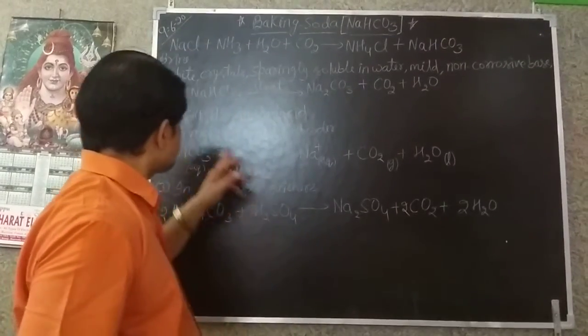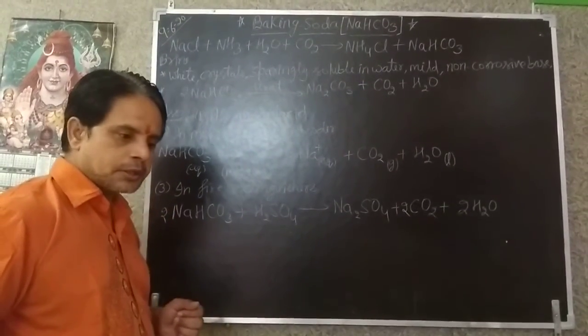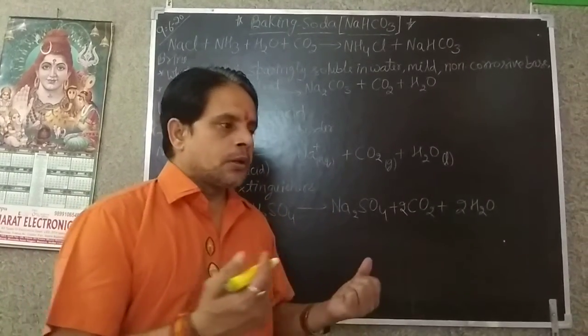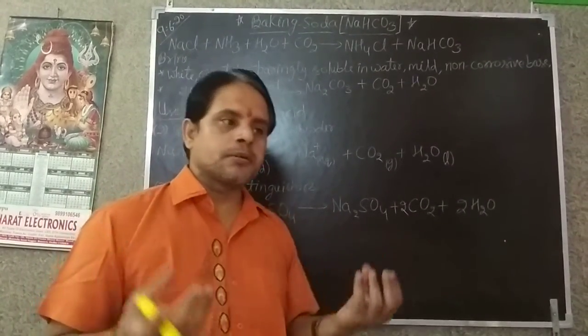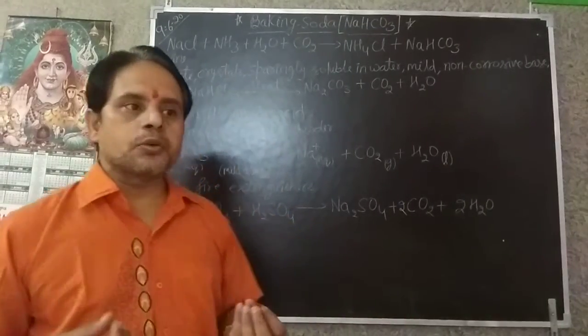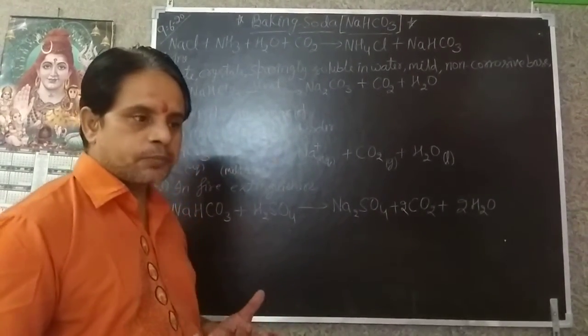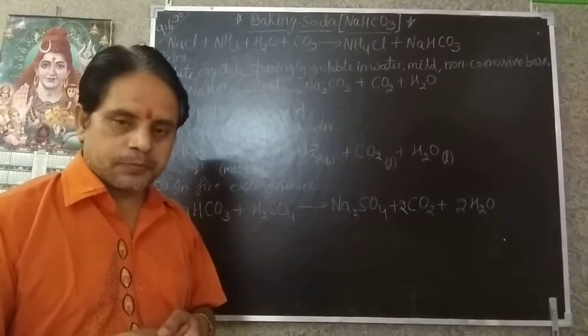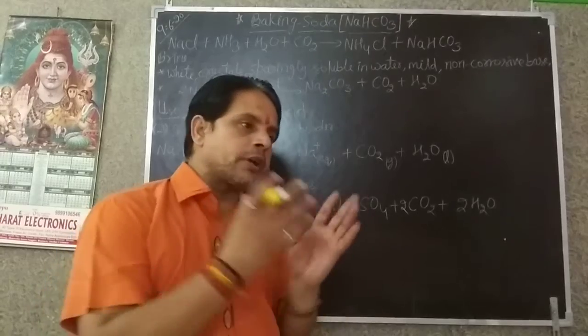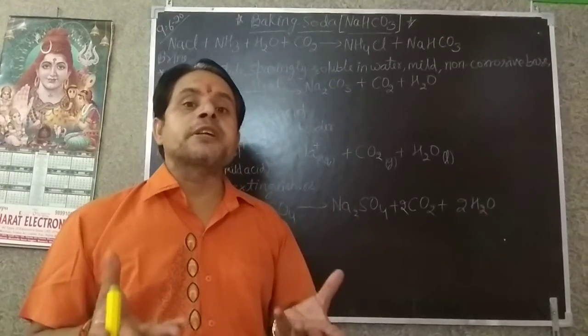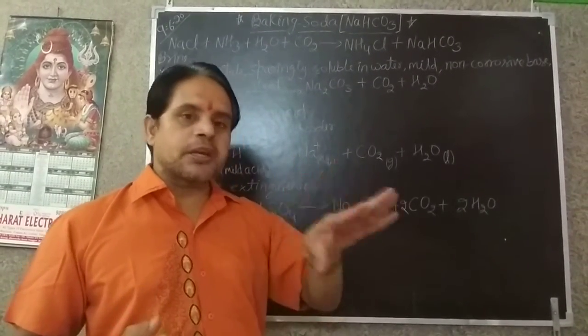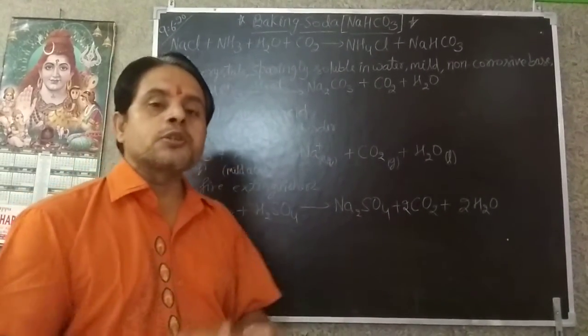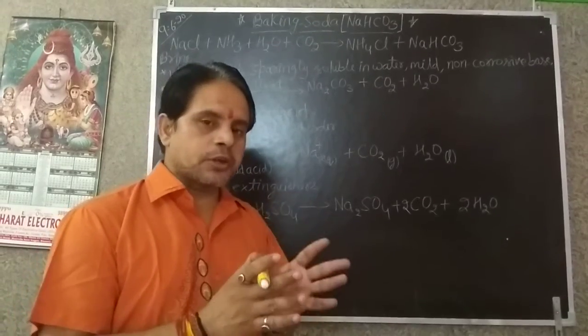Baking powder is very helpful in our domestic use. When we make cake, bread or biscuits, we use baking powder. We use baking powder with wet dough. This wet dough becomes spongy and soft. How? Let us try to understand.